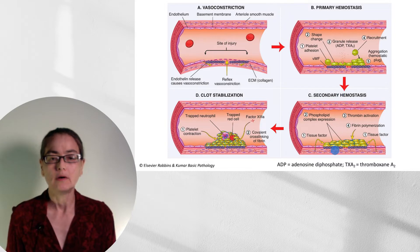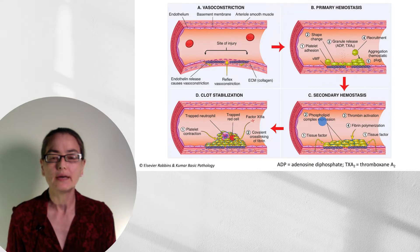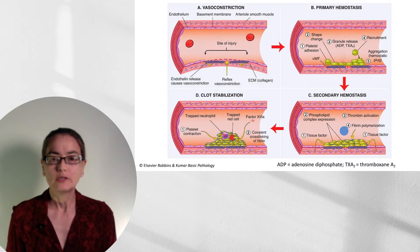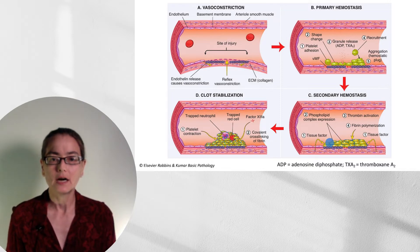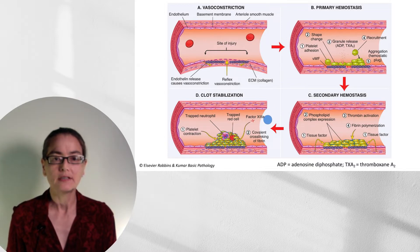Moving along, exposure of tissue factor and the phospholipid complex on the platelets forms the initiation for the coagulation cascade, which ends with activation of thrombin. With this, we get fibrin polymerization, which stabilizes the clot. But even here it's not entirely stable — one of the things thrombin does is activate factor XIII, which allows cross-linking of fibrin.